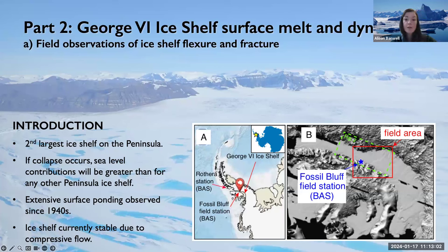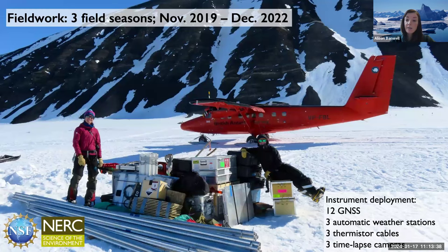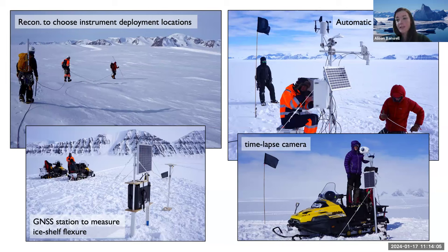Extensive surface meltwater ponding has been observed on George VI since the 1940s, though its retreat has been relatively gradual due to compressive flow between two land masses. We conducted fieldwork out of the Fossil Bluff Research Station run by the British Antarctic Survey. We had three field seasons, the first in November 2019 — spring in Antarctica, just before melting starts. We spent a month on the ice shelf installing instruments. We went before the melt season because it would have been impossible to travel by snowmobile once melting started.